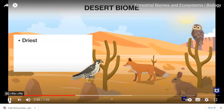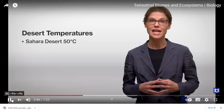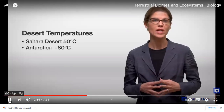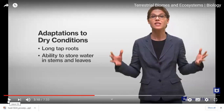The desert biome is the driest of all biomes, characterized by low rainfall averaging less than 30 centimeters per year. Although most people think of deserts as very hot, deserts can also be very cold — temperatures can exceed 50 degrees Celsius in the Sahara or drop to negative 80 degrees Celsius in Antarctica, which is considered a desert due to low rainfall. Plants in deserts tend to be small with adaptations to dry conditions, such as long tap roots or the ability to store water as seen in cacti.